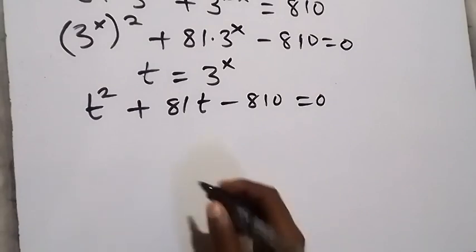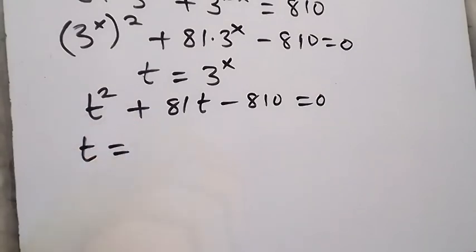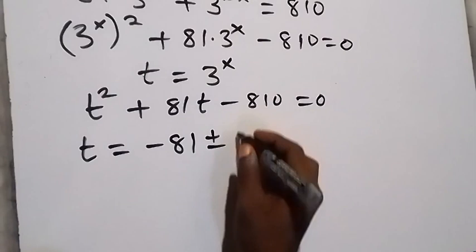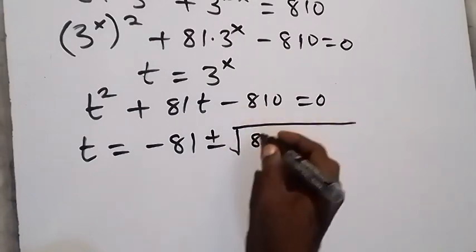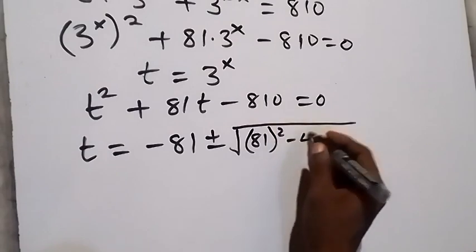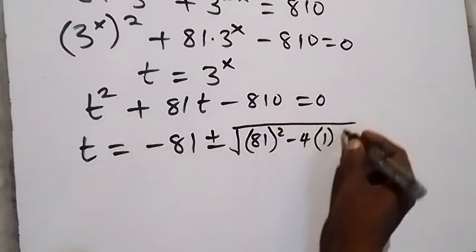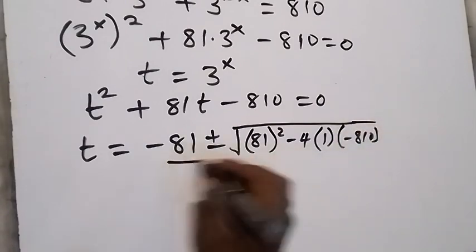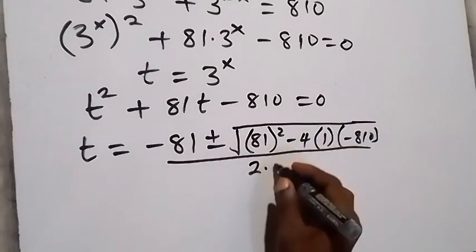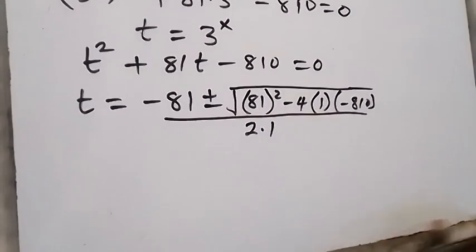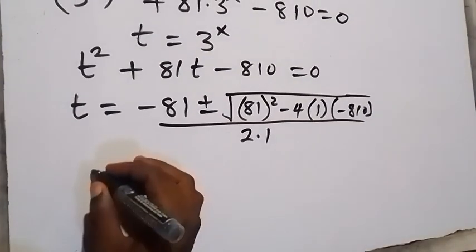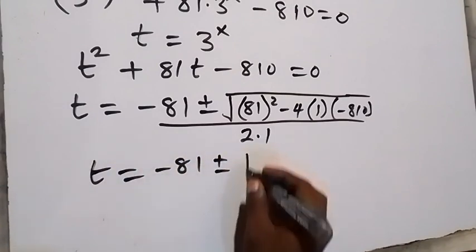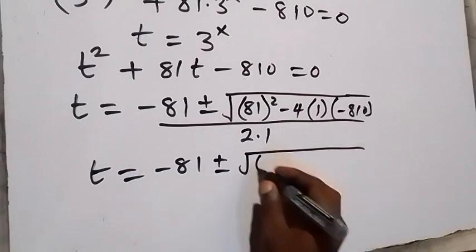This is a quadratic equation, so we apply the quadratic formula. t equals minus b, plus or minus square root of b squared minus 4ac, all divided by 2a. Here b is 81, a is 1, and c is minus 810. So t equals minus 81, plus or minus square root of 81 squared, which gives 6561.